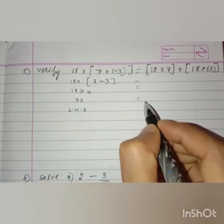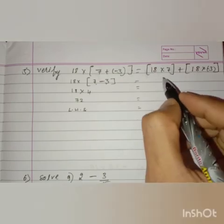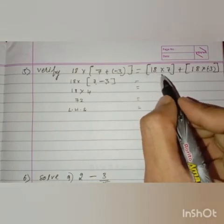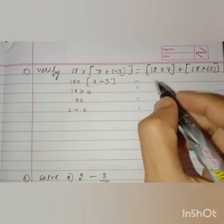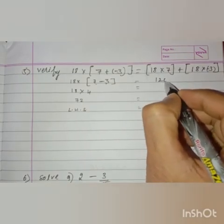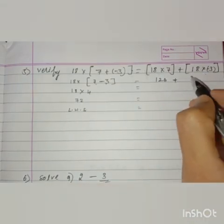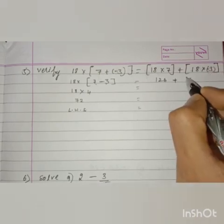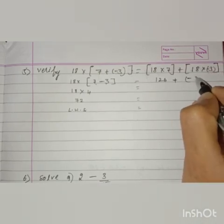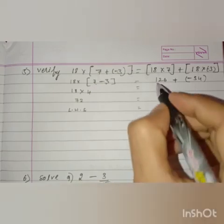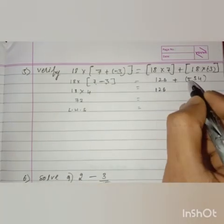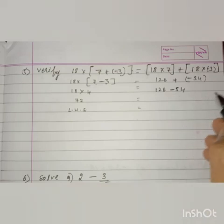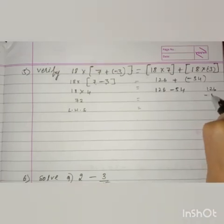Now let us find the value of RHS. Multiply 18 times 7, which is 126. Then plus into minus is minus, so we have 18 times 3 which is 54. So RHS is 126 minus 54.